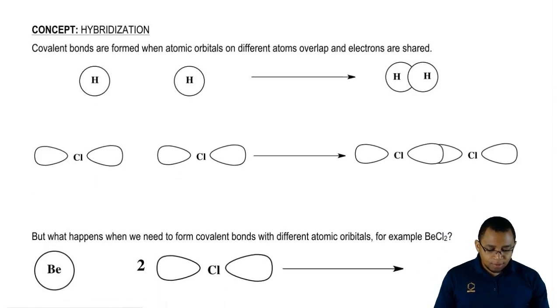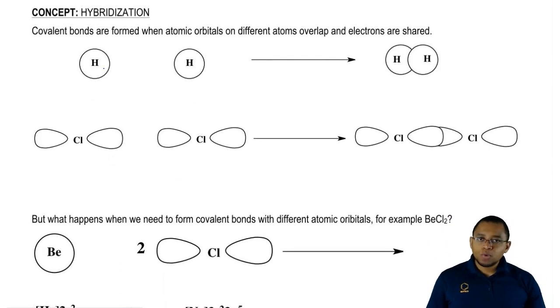If we take a look at this first example, here we have two hydrogens. They want to combine together to give us H2. Their electron configurations are 1S1.